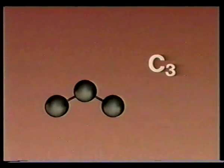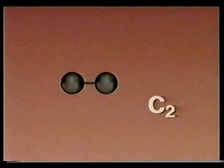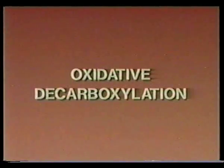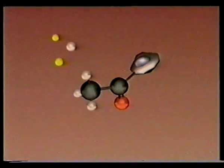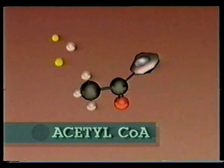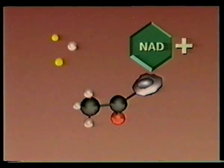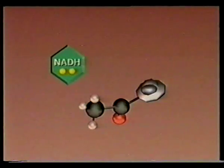Pyruvate is a three-carbon molecule, but the Krebs cycle uses a two-carbon molecule as its starting point. So an intermediate process, oxidative decarboxylation, is required to prepare pyruvate for the Krebs cycle. As pyruvate encounters coenzyme A, the complex kicks out two electrons, a hydrogen atom and carbon dioxide, to form the acceptable two-carbon acetyl-CoA. The electrons and hydrogen are picked up by NAD+, forming NADH, an intermediate energy carrier.